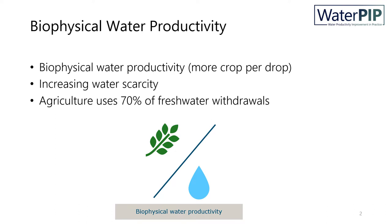Why has water productivity become so popular lately? Well, because we need to produce more food to feed the growing population while at the same time water is becoming scarcer.